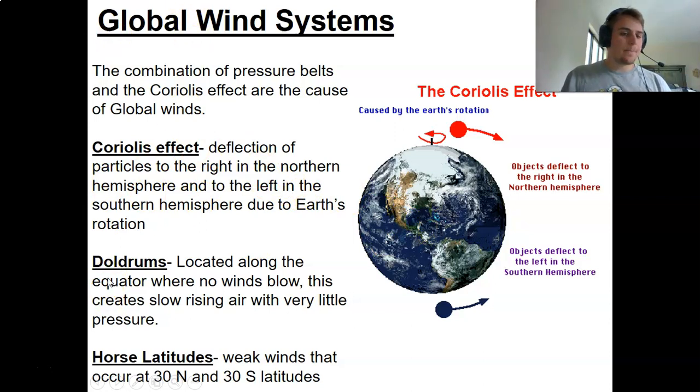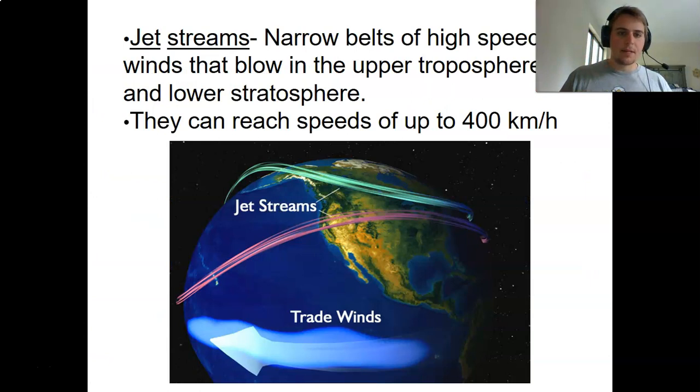We've also got these things called doldrums, which are located along the equator. There's no winds blowing there. This creates very slow rising air, very little pressure. It's why a lot of times the equator is very hot but also kind of very dry. You do see some tropical places in the equator, but you see a lot of deserts as well. And then you've got horse latitudes. These are very weak winds that occur at the 30 north and 30 south because that's right on the line where those pressure systems are coming together.